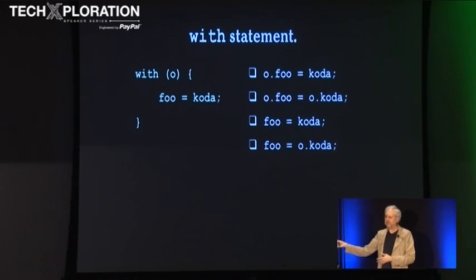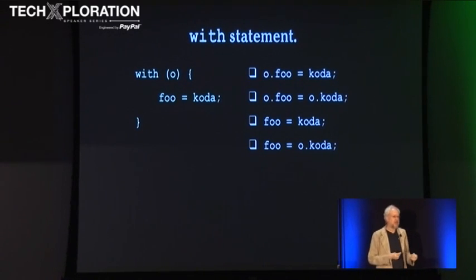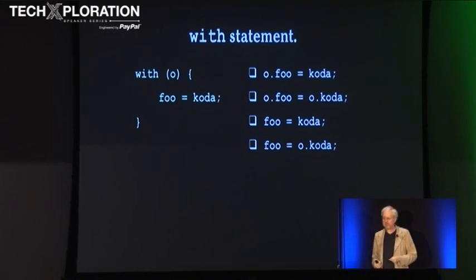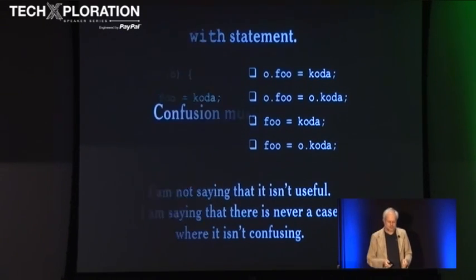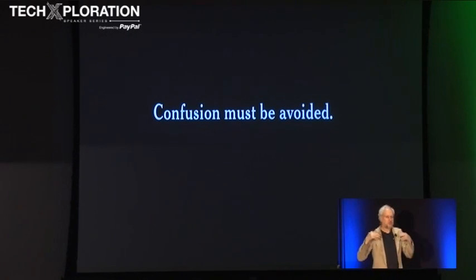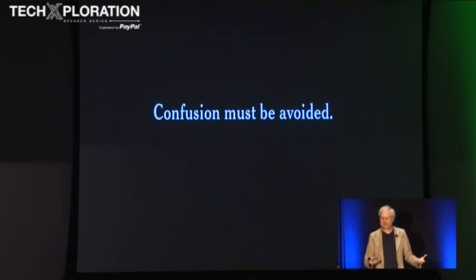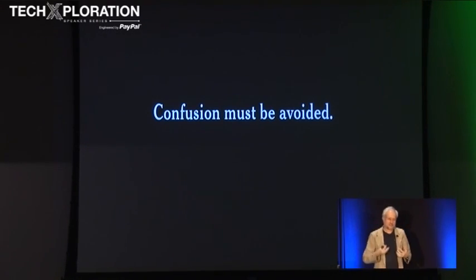A lot of really clever people have worked really hard at trying to find places where they can do useful things with the with statement. I recommend: don't use it, ever. I'm not saying that it isn't useful — I'm saying there's never a case where it isn't confusing. Confusion must be avoided. When we think that the program is doing one thing and it's actually doing something else, that confusion is where bugs come from. We're trying to be bug-free and we want to be as perfect as our limited intelligence will allow.